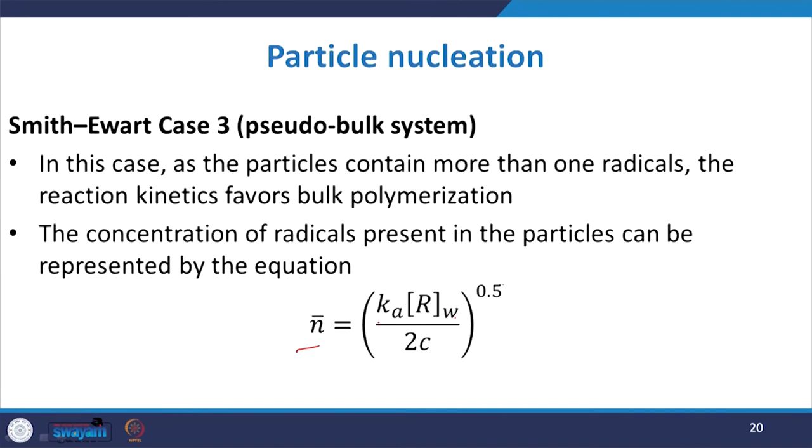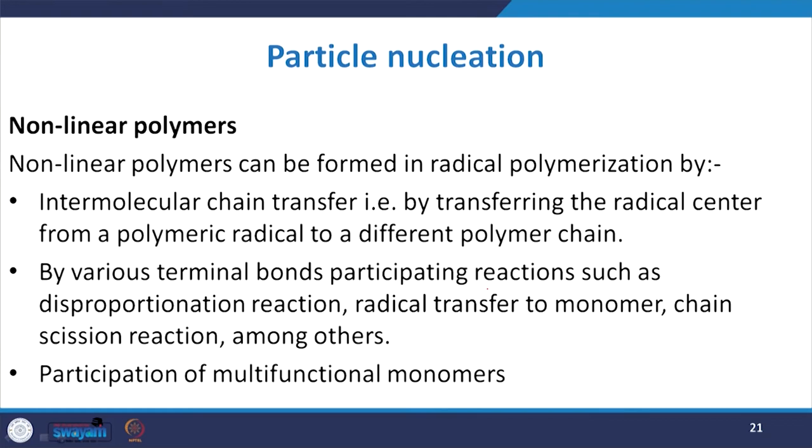Smith-Ewart case 3 is the pseudo-bulk system. In this case, particles contain more than one radical, and the reaction kinetics favor bulk polymerization behavior. The concentration of radicals present in the particles can be represented as: n-bar = k_a * [radical]_w / (2 * C^0.5). Non-linear polymers may also need to be considered in some emulsion polymerization systems.